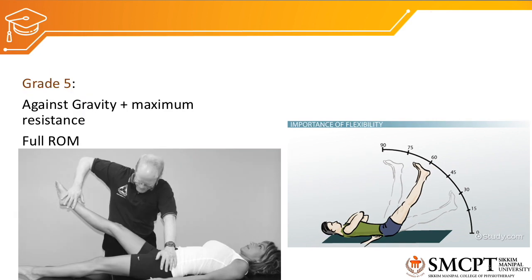Once graded as grade 4, we can add maximum resistance for that particular muscle and check whether it can function against gravity and against maximum resistance, fulfilling the available range of motion. If the muscle is able to perform, we grade it as grade 5.